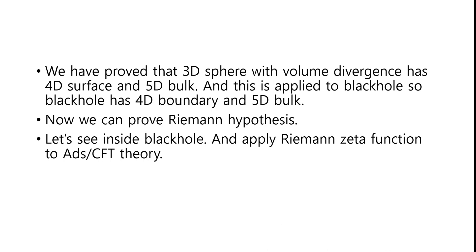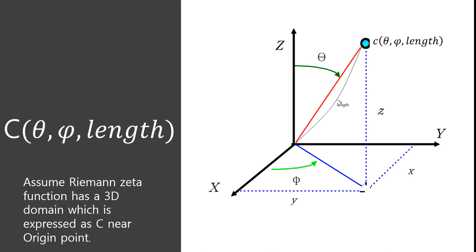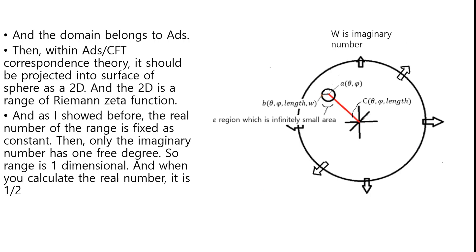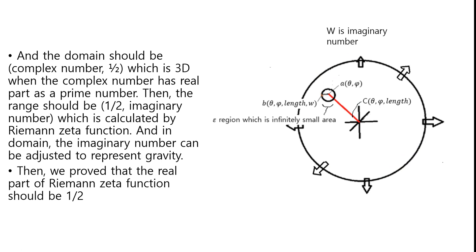Now we can prove the Riemann hypothesis. Let's put C inside the black hole and apply the Riemann Zeta function to ADS-CFT theory. Assume the Riemann Zeta function has a 3D domain expressed as C near the origin point, and the domain belongs to ADS. Then within ADS-CFT correspondence theory, it should be projected into the surface of the sphere as 2-dimensional, and the 2-dimensional is the range of the Riemann Zeta function. As shown before, the real number of the range is fixed as a constant, then only the imaginary number has one free degree, so the range is one-dimensional. When we calculate the real number, it is 1/2. The domain should be complex number with real part 1/2. When the complex number has real part as a prime number, the range should be (1/2, imaginary number) calculated by the Riemann Zeta function, and in the domain, the imaginary number can be adjusted to represent gravity. Then we proved that the real part of the Riemann Zeta function should be 1/2.